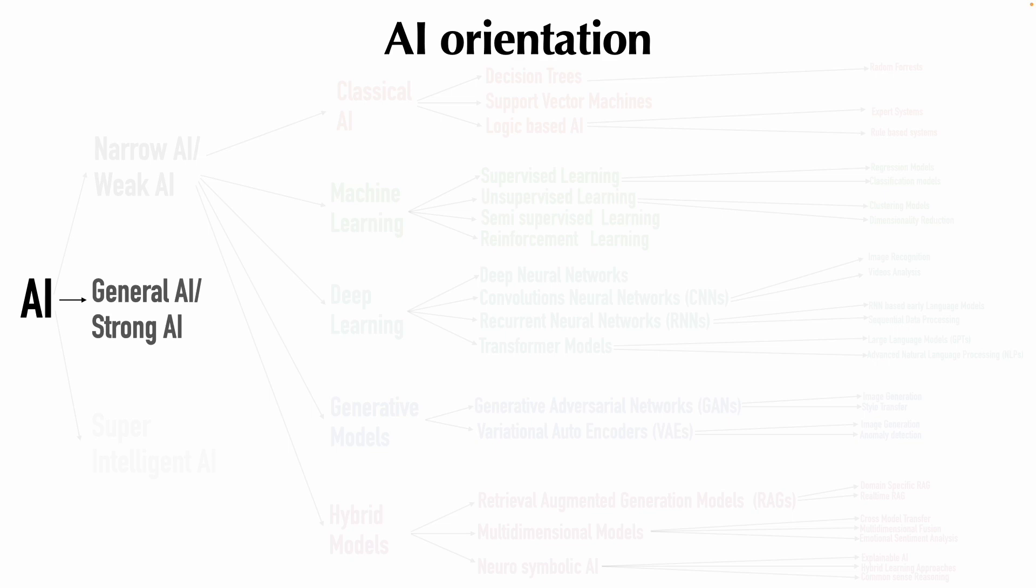When I say strong AI or general AI, it basically refers to an AI system with human cognitive abilities. It has consciousness. If it is presented with an unfamiliar task, this AI should be able to figure it out without human intervention. It should understand, learn, apply the knowledge in different contexts.